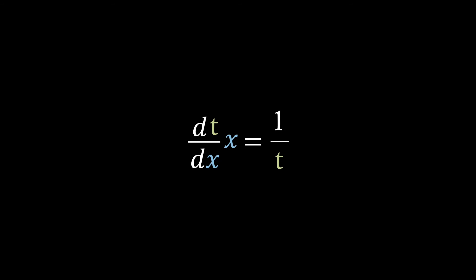So if we remember that we want to get t on the same side as dt over dx we're just left with t dt over dx equals 1 over x which is now separated. And just as before if we integrate in terms of x we can see that the dx's will cancel just leaving us with the integral of t in terms of t and the integral of 1 over x in terms of x.